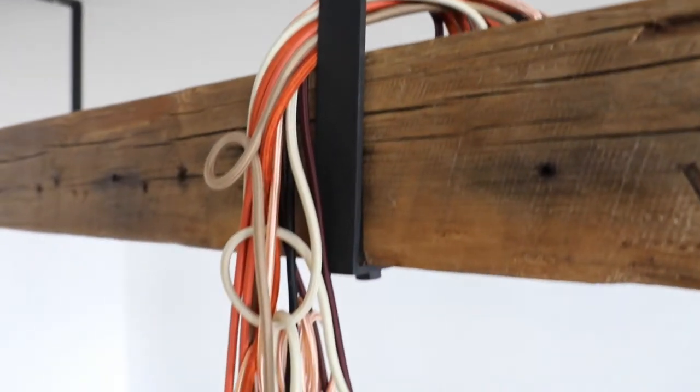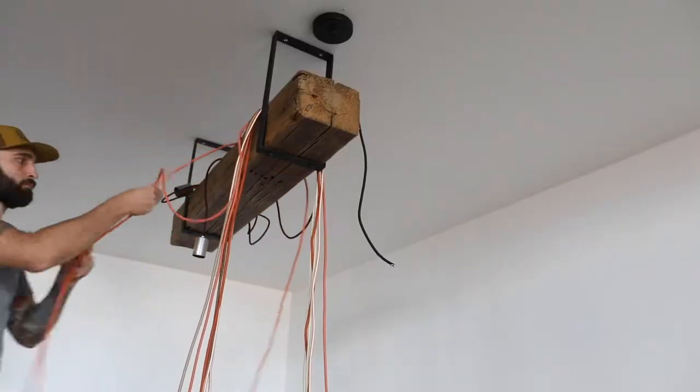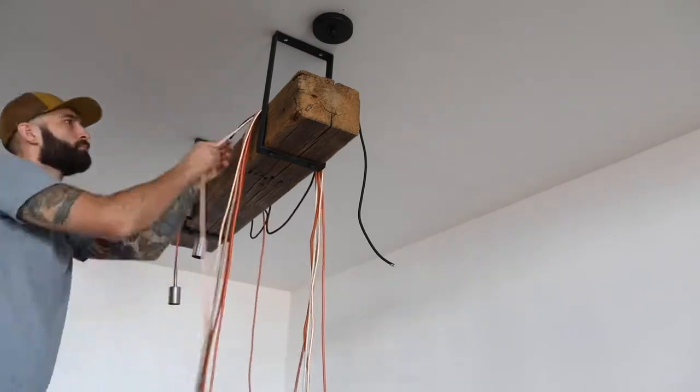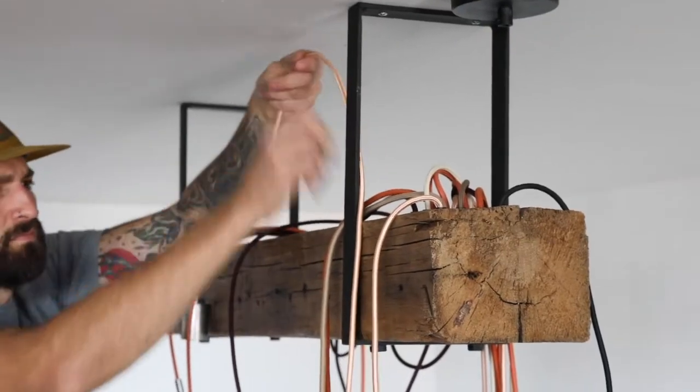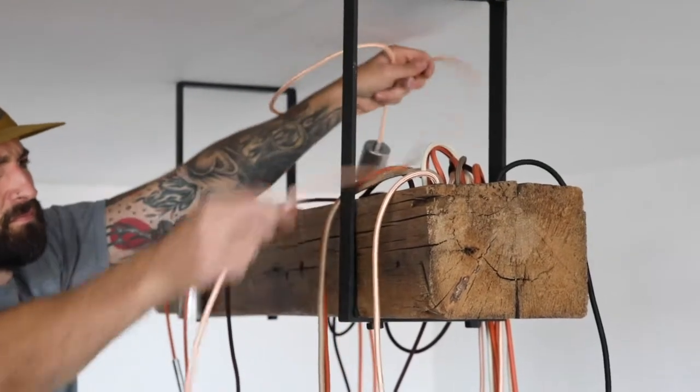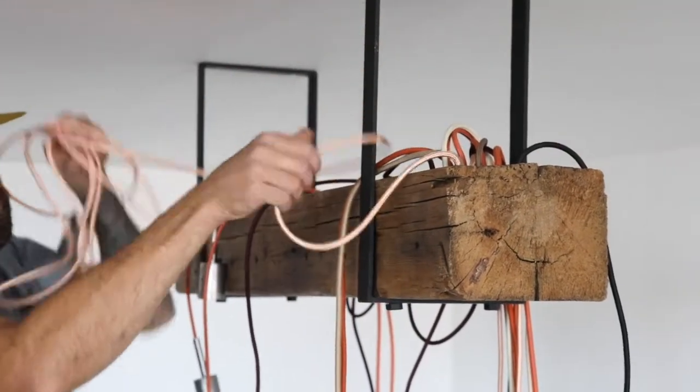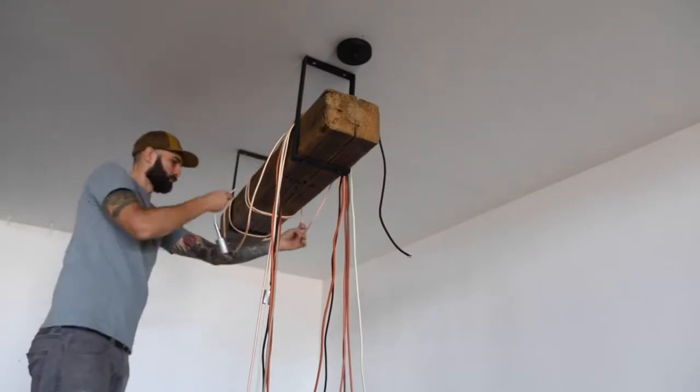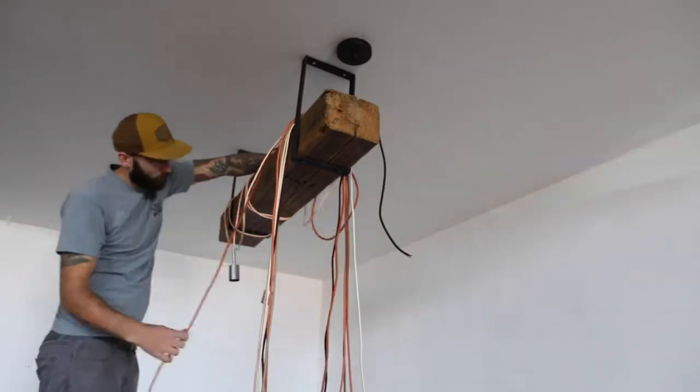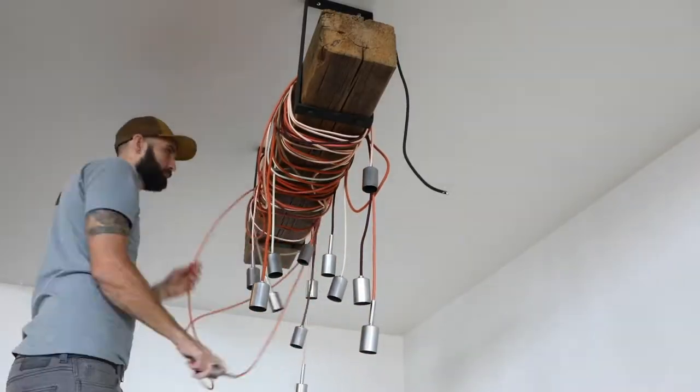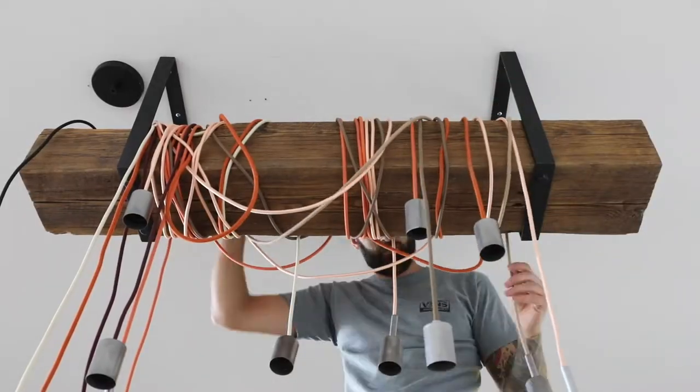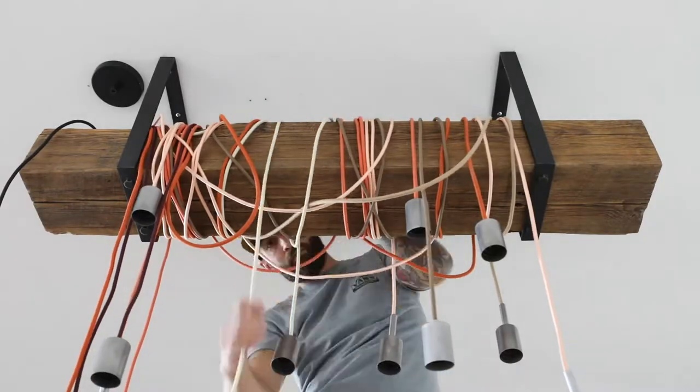All that's left to do at this point is wrap the pendants and wire your master power to your ceiling canopy. This next part is all about your personal design preference. Choose how you want your pendants to drop and how much overlap you want with your cloth covered electrical wire. It may take some time or even a couple tries to get it wrapped exactly how you prefer.